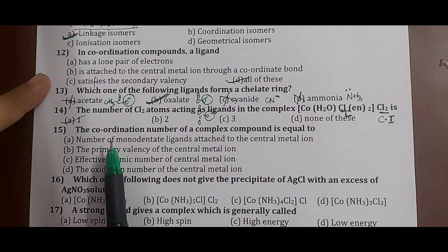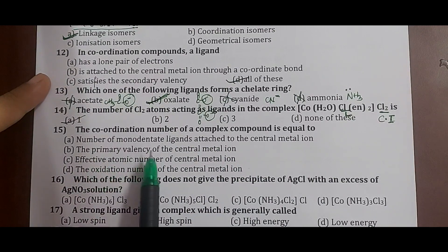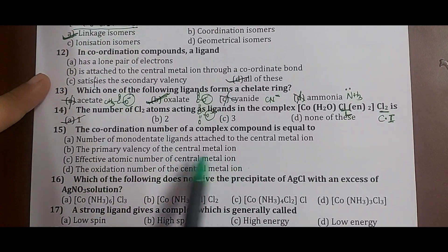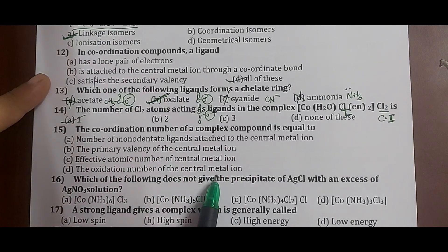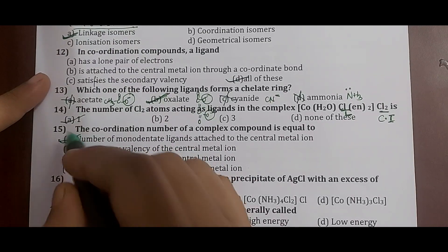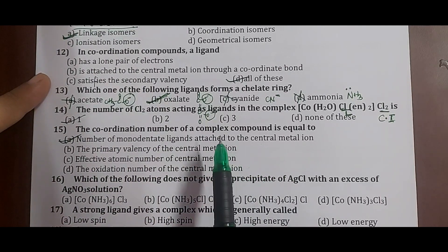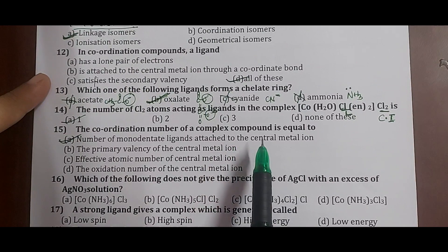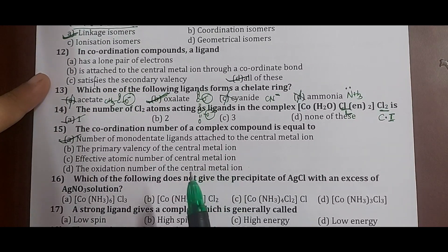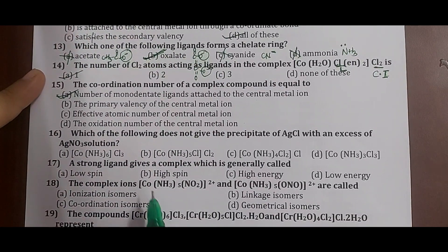Question 15: the coordination number of a complex compound is equal to the number of monodentate ligands attached to the central metal ion. Based on the number of ligands attached, or coordinate bonds formed, we define the coordination number. The correct answer is option A.